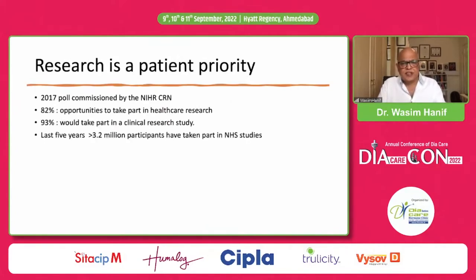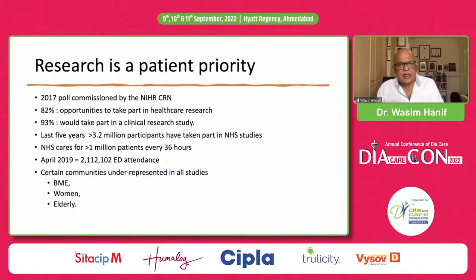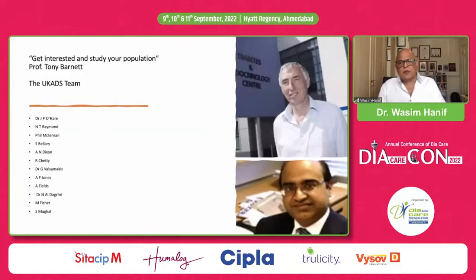The NIHR-CRN has confirmed that research is very important, and the NHS does a lot of research, caring for nearly a million patients every 36 hours. But even in this situation where research is part of a healthcare system, certain communities are underrepresented in all studies. This includes ethnic minorities like Black and South Asians in the UK, as well as women and the elderly. Whenever you talk about doing research in ethnic minorities or South Asian communities in the UK, one of the things that is mentioned is that these communities are not interested in taking part in research or don't have the aptitude for research.